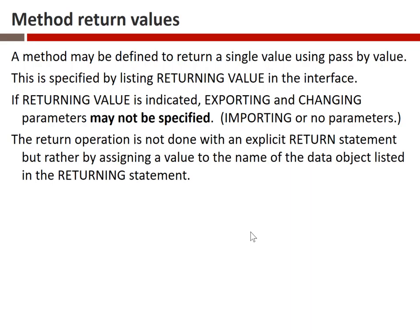Unlike many other programming languages, ABAP does not have an explicit return statement. In other languages you get to the end of a method and write 'return' followed by a variable or calculation. In ABAP, instead we define a variable in the method interface and simply set the value of that variable in the method. When the method reaches the end of its logic, whatever the value of that variable is, that is what gets returned.